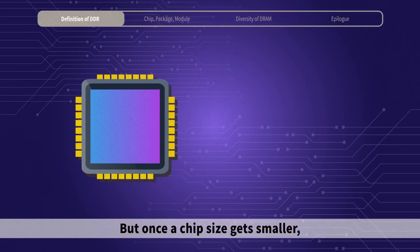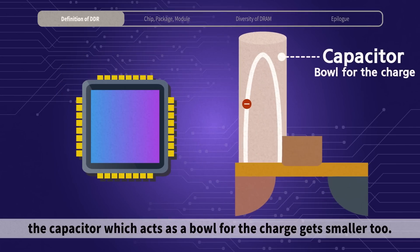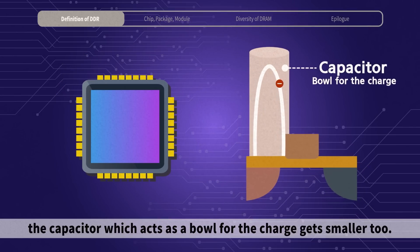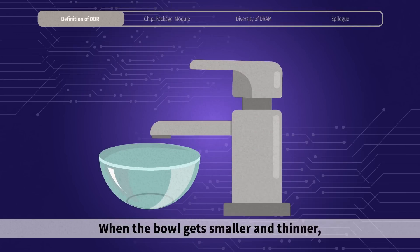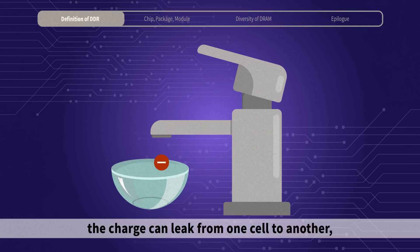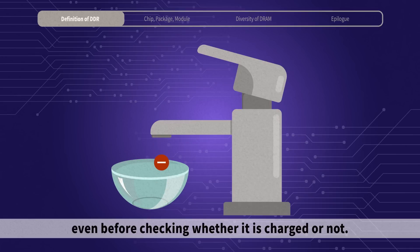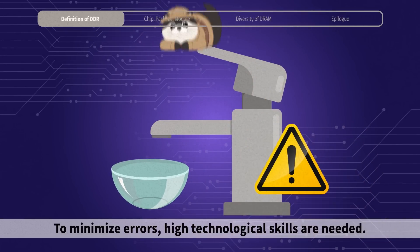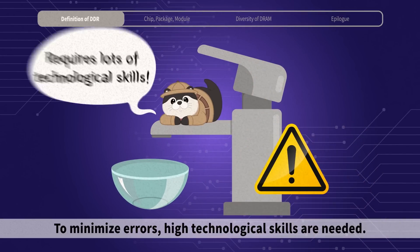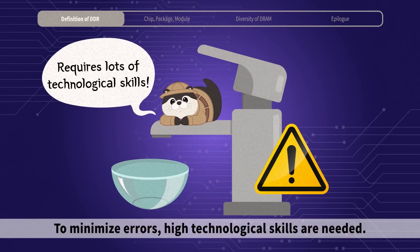But once the chip size gets smaller, the capacitor, which acts as a bowl for the charge, gets smaller too. When the bowl gets smaller and thinner, the charge can leak from one cell to another, even before checking whether it is charged or not. This may cause some kind of errors. To minimize errors, high technological skills are needed.